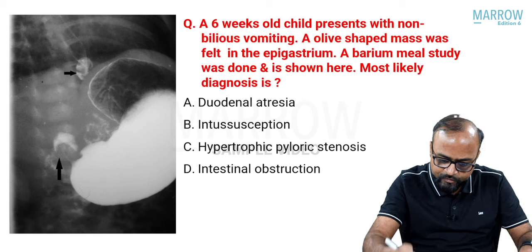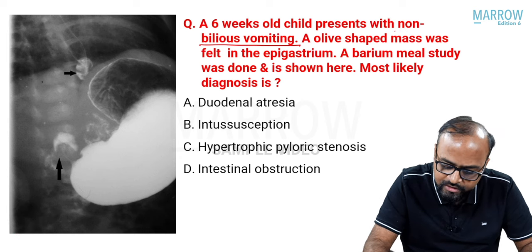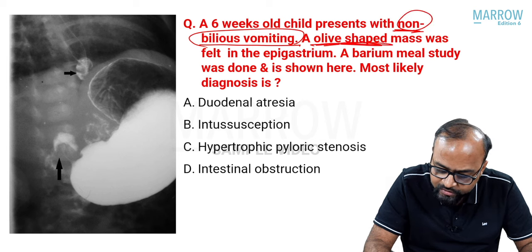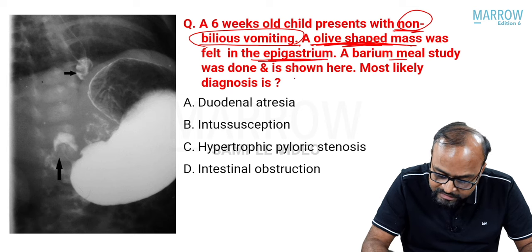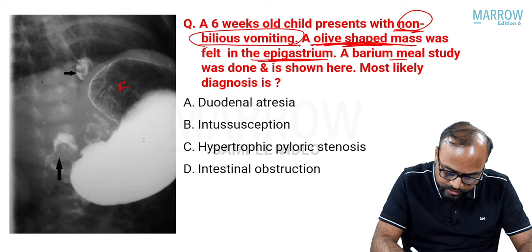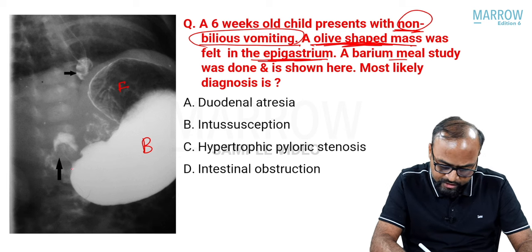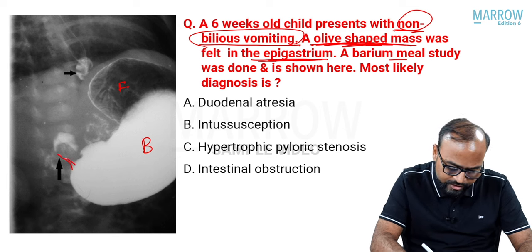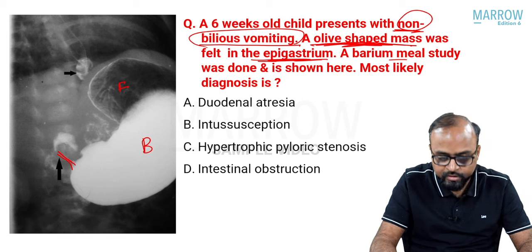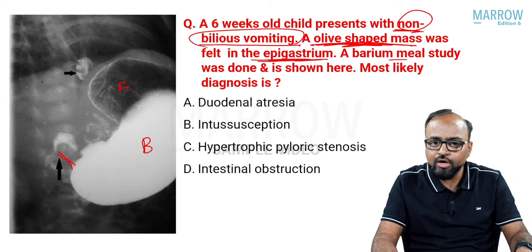A six-week-old child presents with non-bilious vomiting — an important clue — and an olive-shaped mass felt in the epigastrium. A barium meal study is shown. You can see the fundus and the distended body of the stomach; at the area of the pylorus there is a very thin track, because the pylorus is narrowed. This is pyloric stenosis.